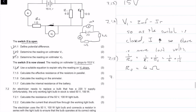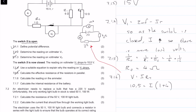Question 7.1.6: calculate the reading of the ammeter. Using the equivalent circuit, V = I × R_total. The voltage across V1 is 10.5 volts, and R_total is 4 + 1 = 5 ohms. Solving for I gives I = 2.1 amps. We get three marks for that.